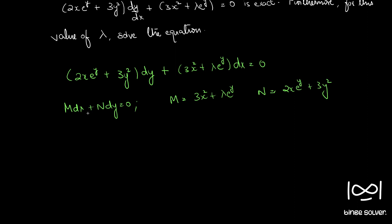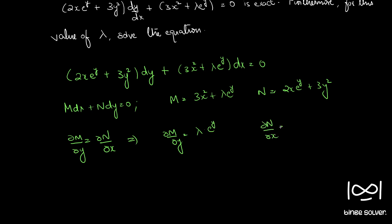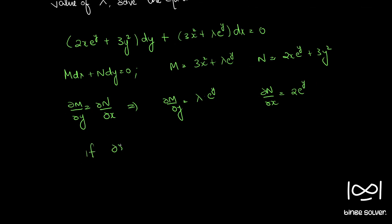The condition for this differential equation to be exact — the necessary and sufficient condition — is ∂M/∂y = ∂N/∂x. That implies ∂M/∂y = λe^y and ∂N/∂x = 2e^y. So if the differential equation is exact, ∂M/∂y = ∂N/∂x, that implies lambda = 2.